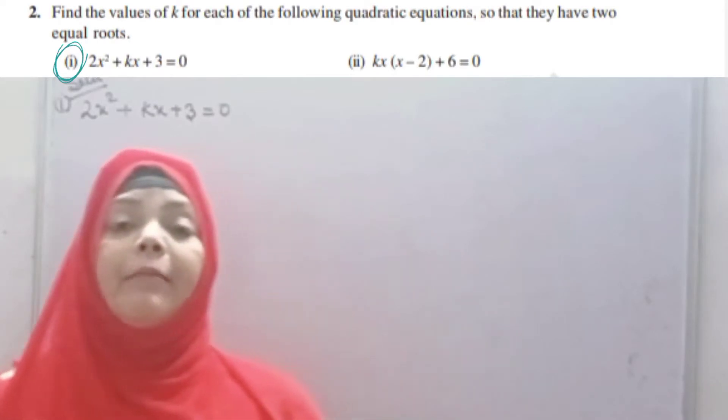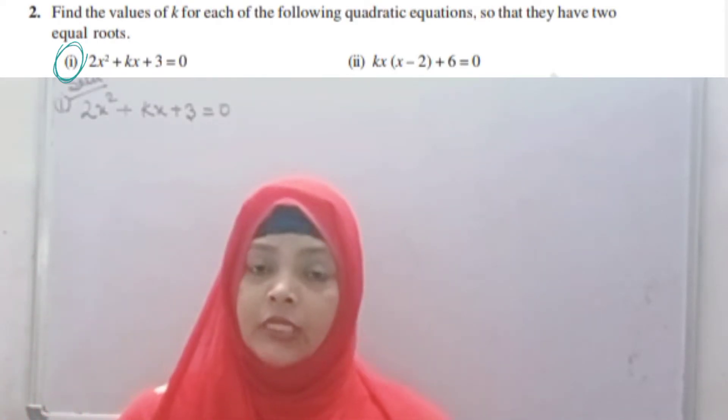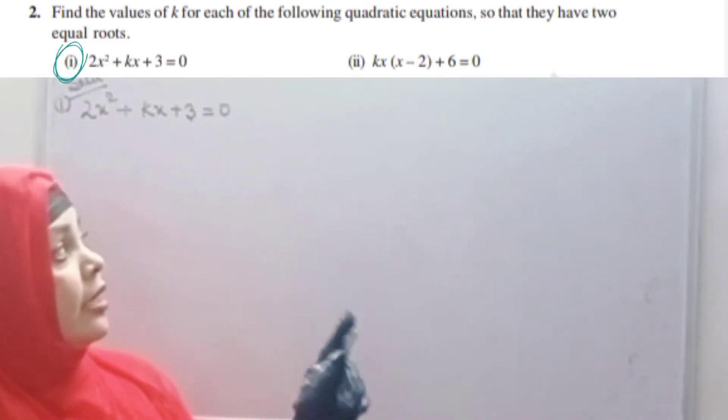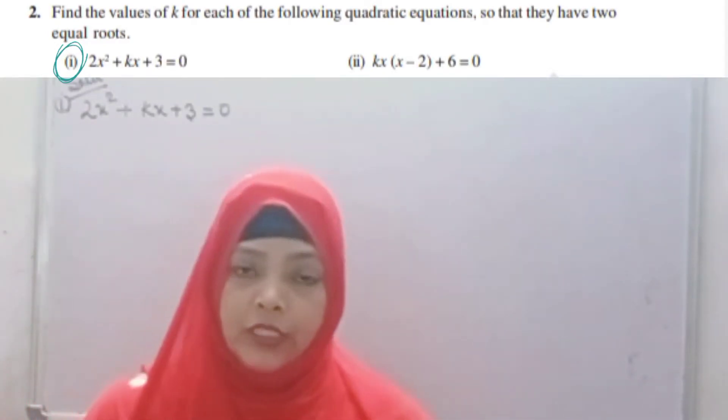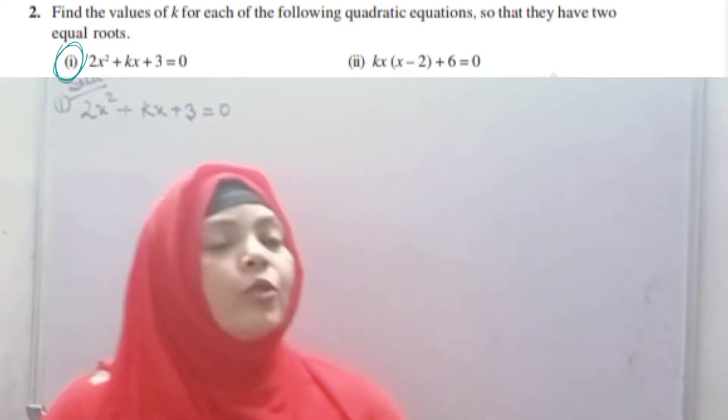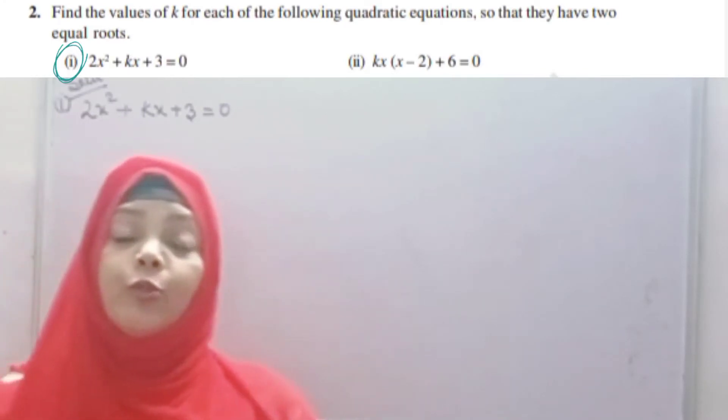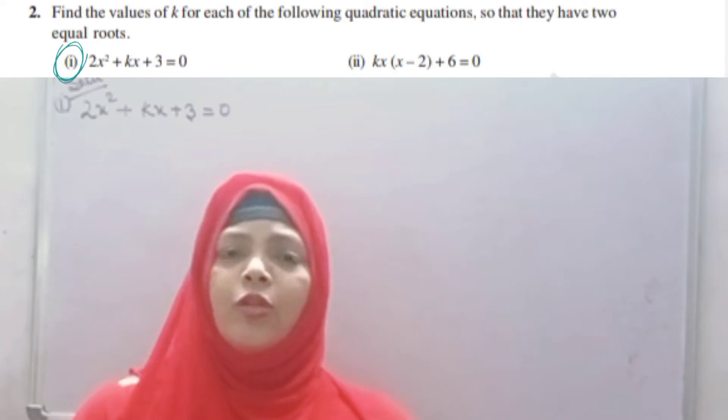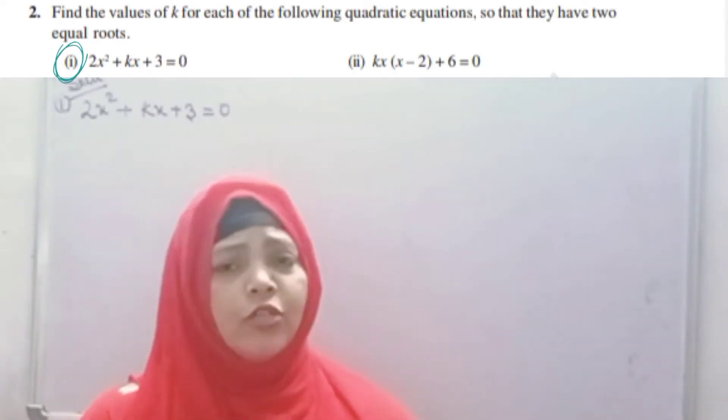The question is simply that we have to find k values for each equation such that they have two equal roots. For the value of k, there should be two equal roots. There are two equations, two parts. It's very simple and easy to find the value of k. So let's see.